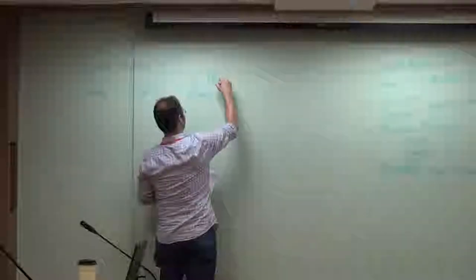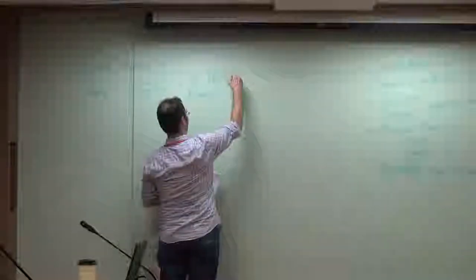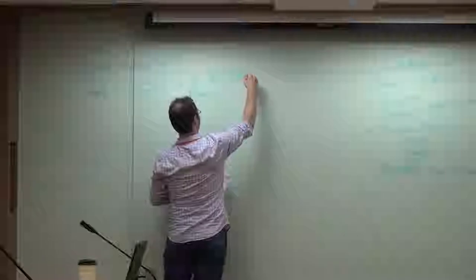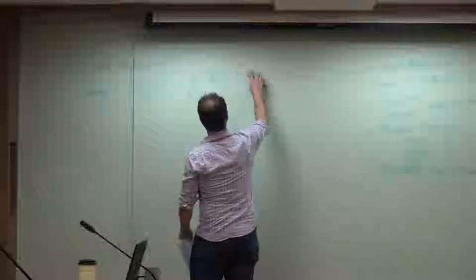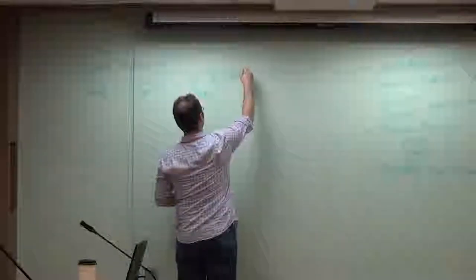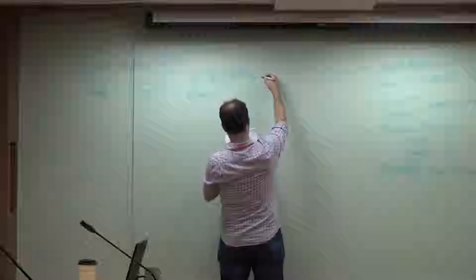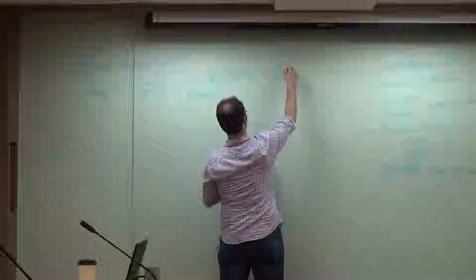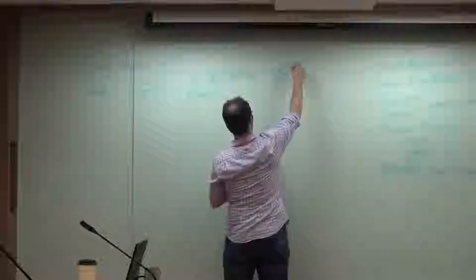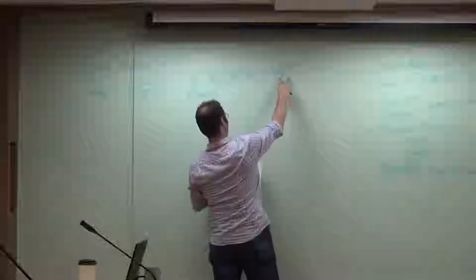We have fermion fields — up, down, maybe the strange quark we'll talk about. We have a derivative; it's a gauge theory, so I have a gauge derivative as well. Here I've explicitly written out the SU(3) generators.